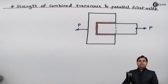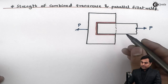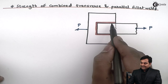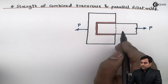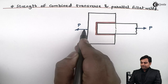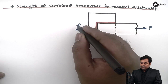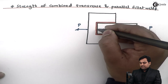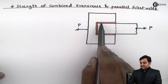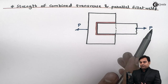Hello students. In this video we will see the strength of combined transverse and parallel fillet welds. Here we have a diagram showing two plates attached to one another — in red is the welded joint. After joining, the plates are subjected to a load P. This load is perpendicular to one weld, called the transverse fillet weld, and parallel to two other welds, called the parallel fillet welds.